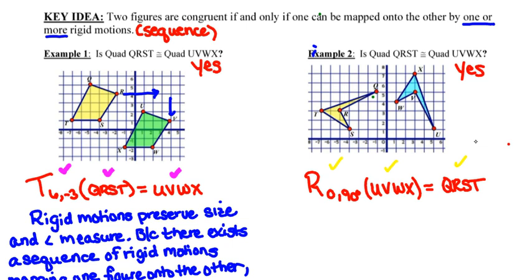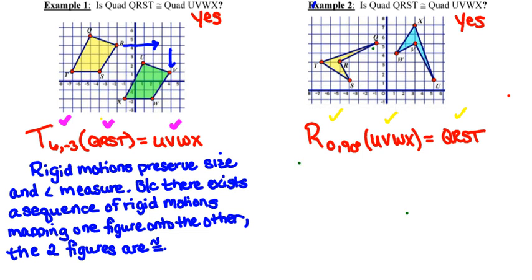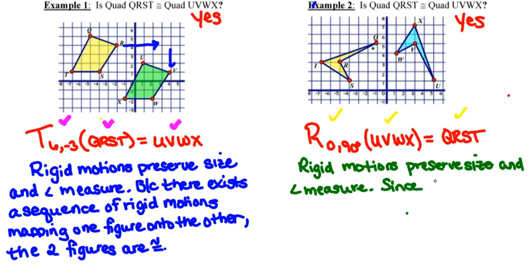And again, if I had considered the yellow quadrilateral the pre-image, then instead of a positive 90-degree rotation, my rotation would have been negative 90 degrees. And again, as far as the justification for that, that whole notion that rigid motions preserve size and angle measure. Since there's a sequence of rigid motions that will map one figure onto the other, they have to be congruent to each other. Remember that word sequence can be one or more than one.